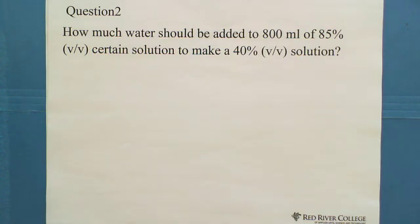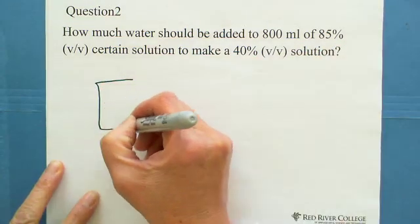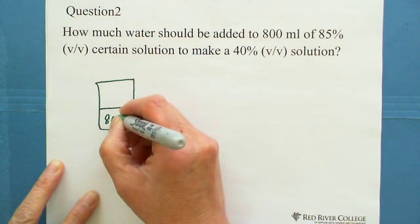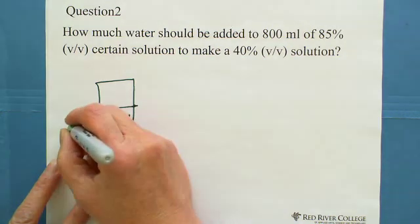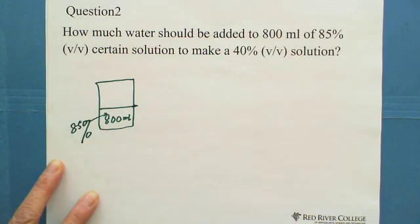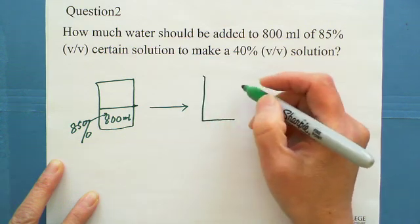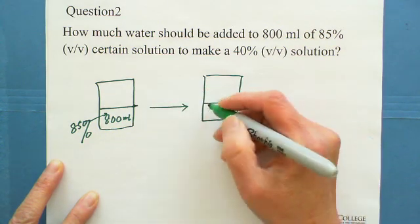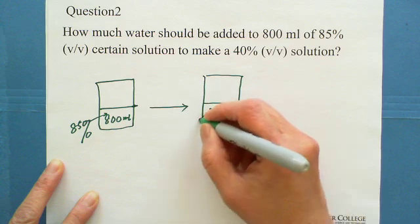For this question, we can make a picture. Let's say you have a container. This one has 800 milliliters and the concentration is 85%. Now we need to make 40%. This is the original, 800. Now this is only 40%.